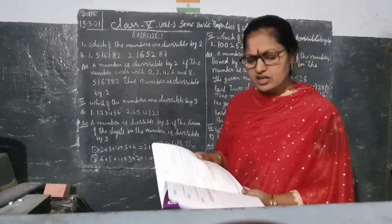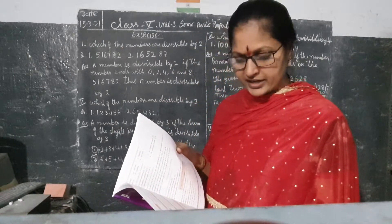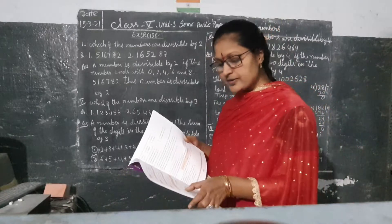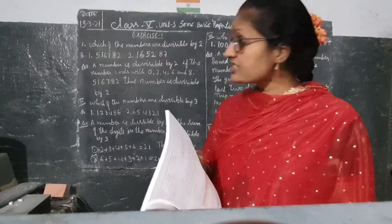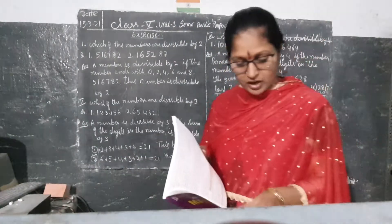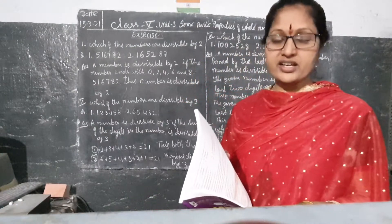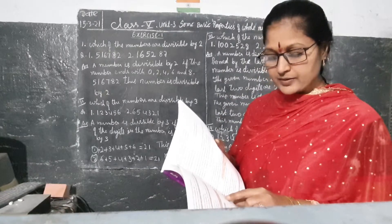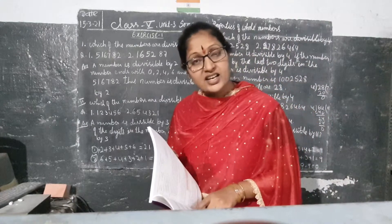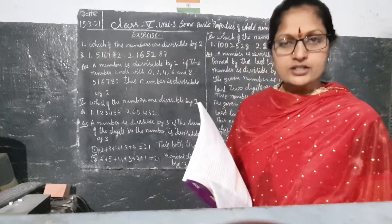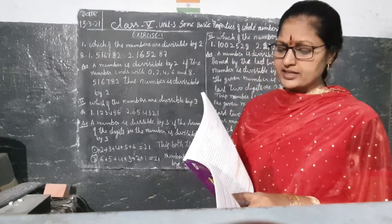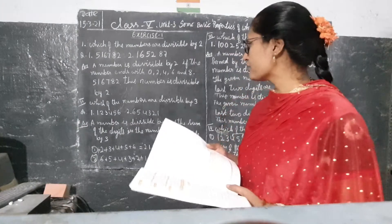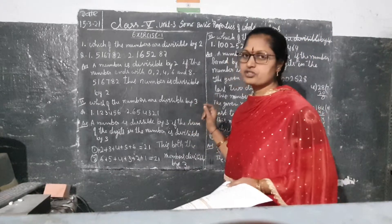You have to search all the numbers. First number: 5,16,782 — last digit is 2, so this number is divisible by 2. Next number: 1,65,287 — last digit is 7, that is not divisible by 2. Next: 7,77,776 — last digit is 6, which is divisible by 2. Next: 11,22,568 — last digit is 8, so 8 is divisible by 2. Next: 10 lakh and 8 — last digit is 8, so that is also divisible by 2. You have to write children.